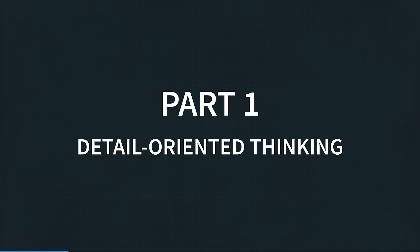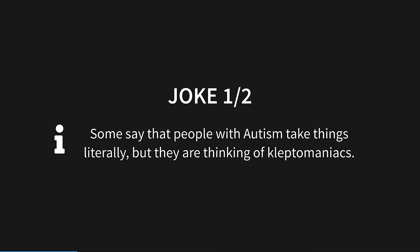Part 1: Detail-Oriented Thinking. I know two autism jokes, and I will share them both with you in this video. Are you ready for the first joke? Joke the first: Some say that people with autism take things literally, but they are thinking of kleptomaniacs.